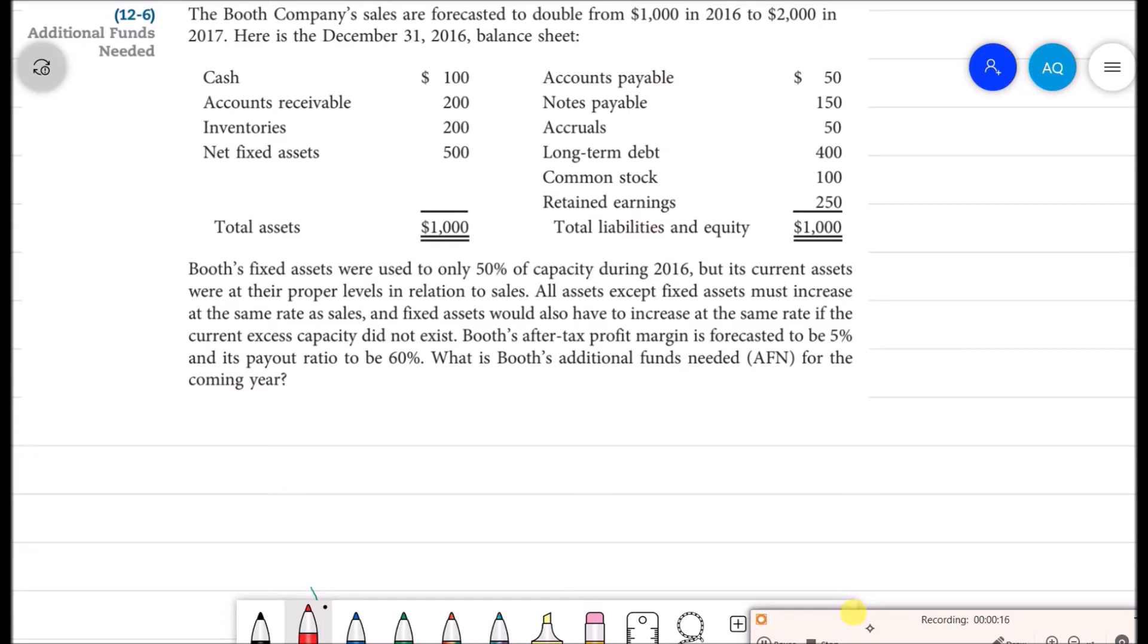The Booth Company sales are forecasted to double from $1,000 in 2016 to $2,000 in 2017. Here is the December 31, 2016 balance sheet.